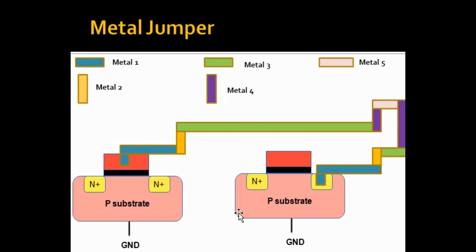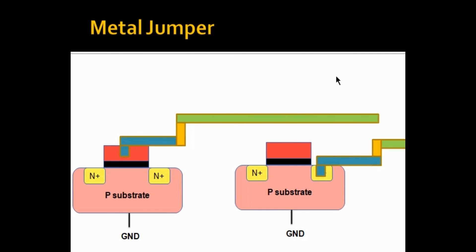During fabrication, lower metal layers are fabricated first and then higher layers. Up until Metal 3 is fabricated, you can see that Metal 3 is long enough to accumulate enough charges to cause an antenna violation. Enough charges accumulate in Metal 3, but there is no path to discharge other than through the gate. The path to diffusion is not yet formed because Metal 4 has not yet been fabricated, so the charges discharge through the gate and damage the gate oxide.